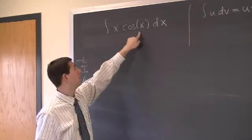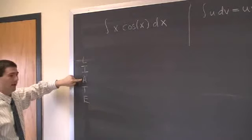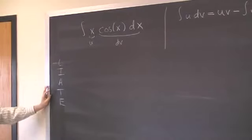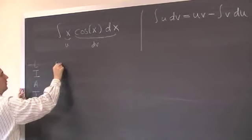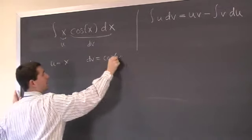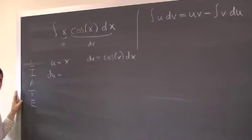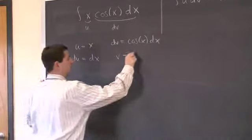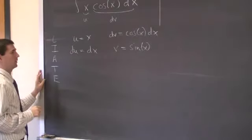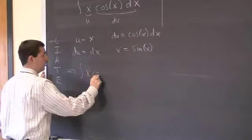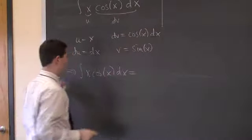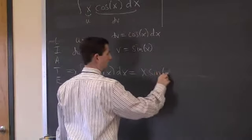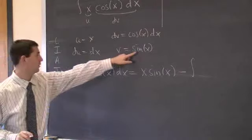So in this case we have an algebraic and a trig. Algebraic comes before trig, so the algebraic should be my u and everything else has to be the dv. So if u equals x and dv equals cosine of x dx, then du equals dx, and we can take v equals sine of x. With this, we get that the integral of x cosine of x dx equals, by this formula, uv minus the integral of v du — so x sine of x minus the integral of sine of x dx.